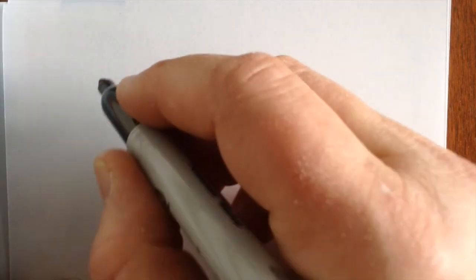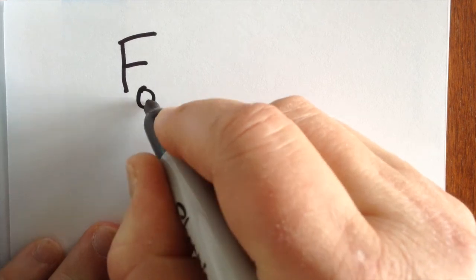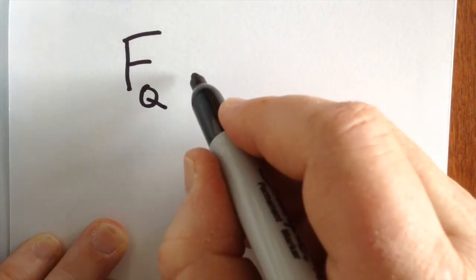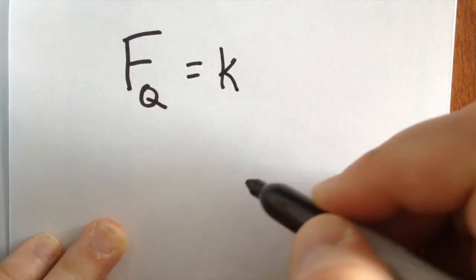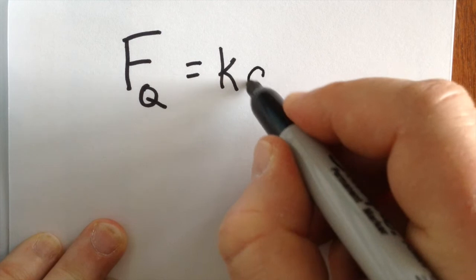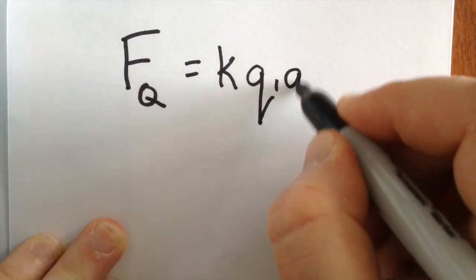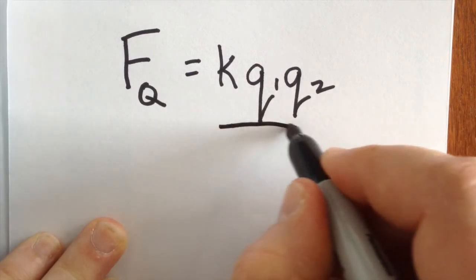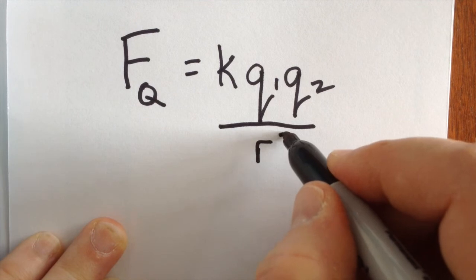We've looked at attraction and repulsion, and we are going to eventually get down to doing some formulas. We're talking about electrostatic forces — the little q is for electrostatic. It depends on a constant k, and our two source charges, and the distance effect is actually 1 over the distance squared.